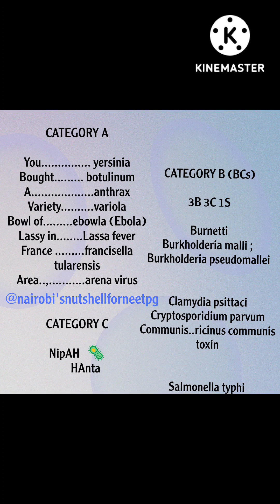Everything else comes under Category B. The mnemonic for Category B is three B's, three C's, and one S. The B's are Brucella, Burkholderia mallei, and Burkholderia pseudomallei. The C's are Chlamydia psittaci, Cryptosporidium parvum, and Ricinus communis toxin. S is Salmonella typhi.